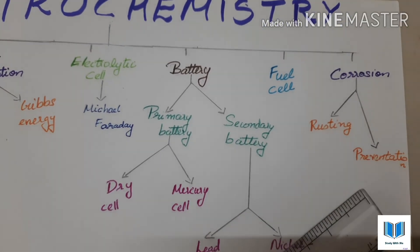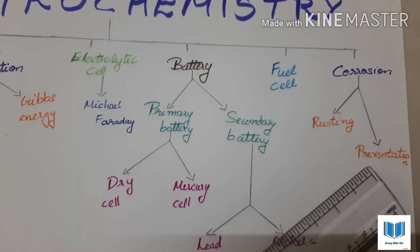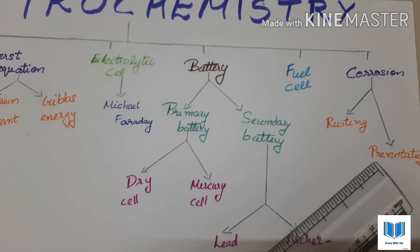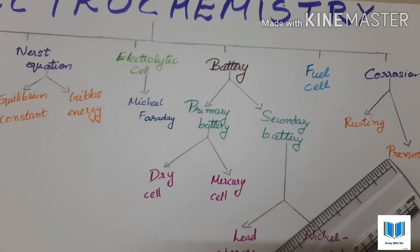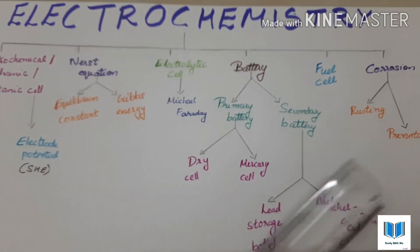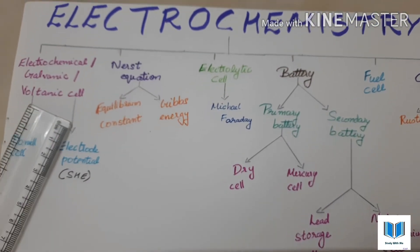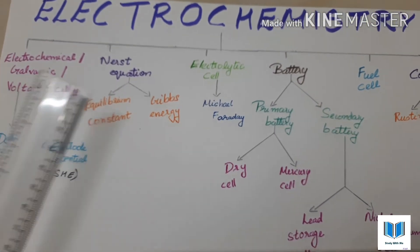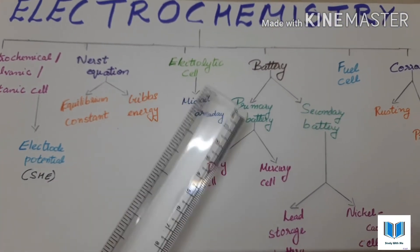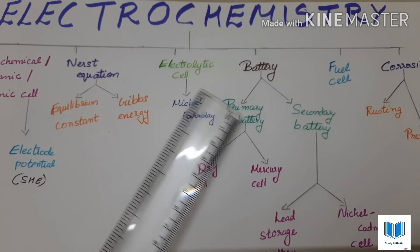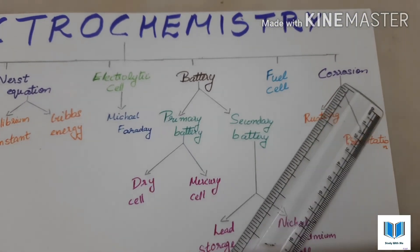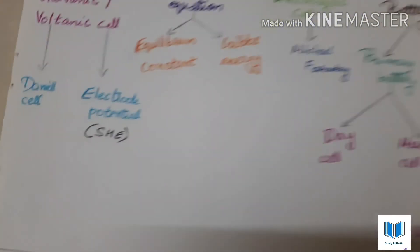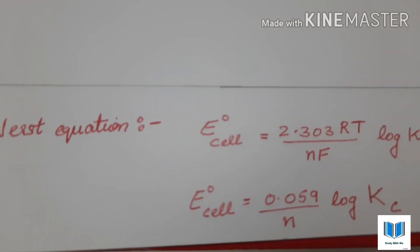Under corrosion: rusting, and then prevention of corrosion. To summarize the chapter Electrochemistry: first topic is electrochemical cell, then Nernst equation, then electrolytic cell, then battery, then fuel cell, and lastly corrosion. Also note the Nernst equation under equilibrium condition.